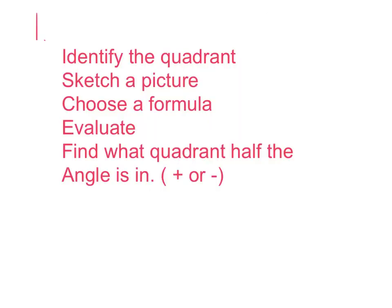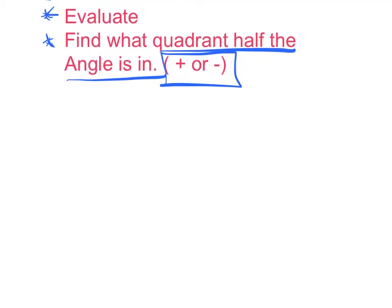Before we actually get started on question 1, let's identify the steps we're going to follow. First and foremost, we're going to identify the quadrant and then sketch a picture of that. We're going to choose a formula right off our sheet. We'll evaluate that formula. And then, here's the kicker. We're going to find what quadrant half the angle is in, and that will tell us whether we're positive or negative.